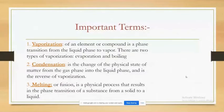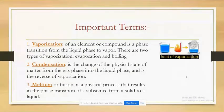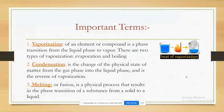Some important terms: vaporization — an element or compound undergoes a phase transition from liquid phase to vapor. There are two types of vaporization: evaporation and boiling. Second, condensation — it is a change of physical state of matter from gas phase into the liquid phase, and is the reverse of vaporization.